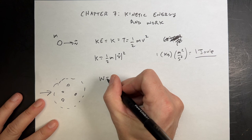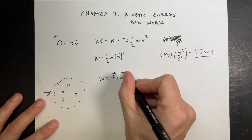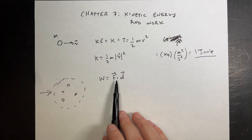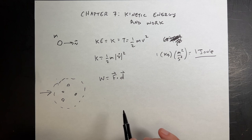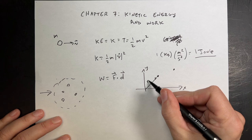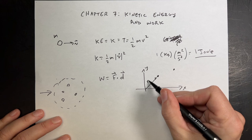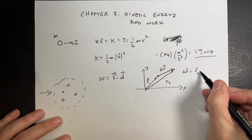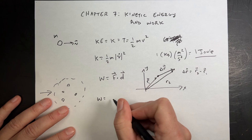Work done by a single force is F dot delta R, where F is the vector force and delta R is the displacement — that's the dot product. I prefer writing work as F dot delta R rather than F dot D because delta R, defined as R2 minus R1, is a more complete way of representing displacement. This definition is only true if the force is constant and the path is straight.